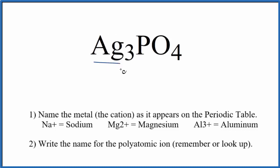Silver is a metal, specifically a transition metal. So we have this metal and this group of nonmetals in the phosphate ion. We're going to use these rules here to write the name for Ag3PO4.